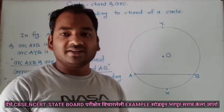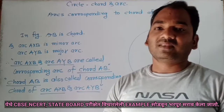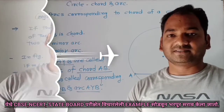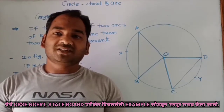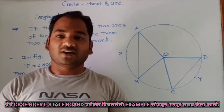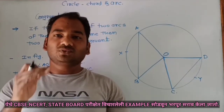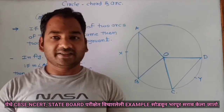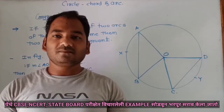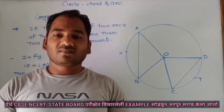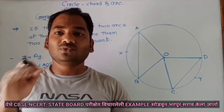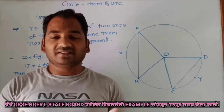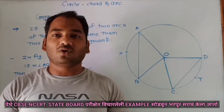I hope you all understand about corresponding arcs as well as corresponding chords. Now look at the next important point of the chapter, that is the congruence of arcs. If two arcs are given, how can they be congruent — that we have to understand here. If the measure of two arcs are the same, then those two arcs are congruent.